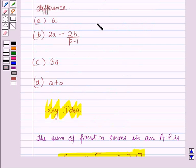Therefore the answer of this question is option B, that is 2a plus 2b over p minus 1.